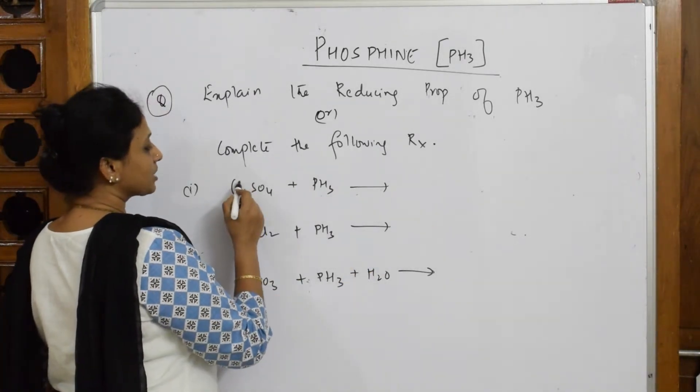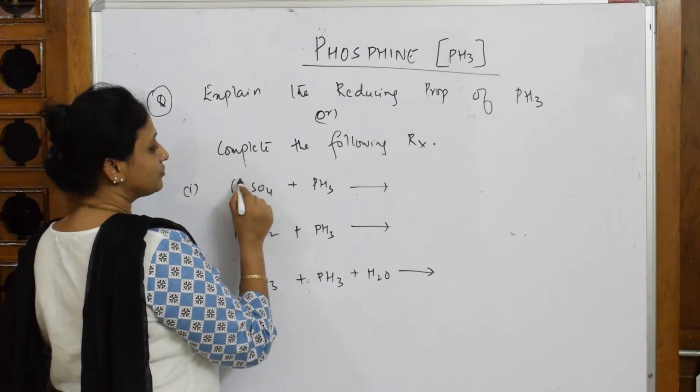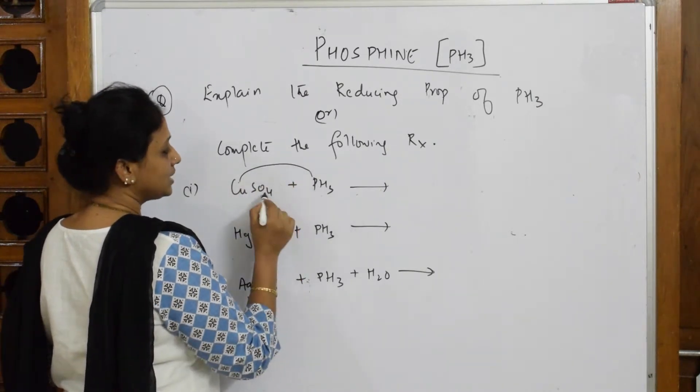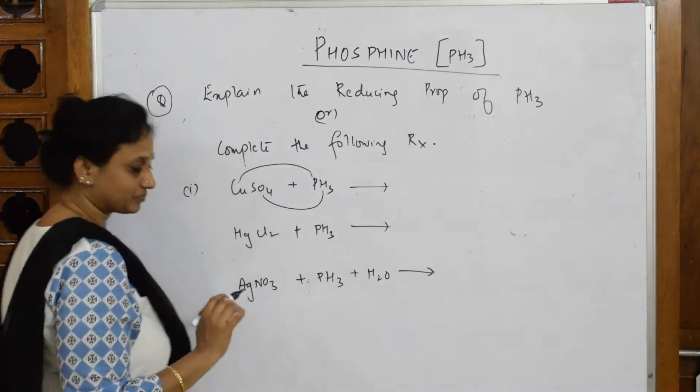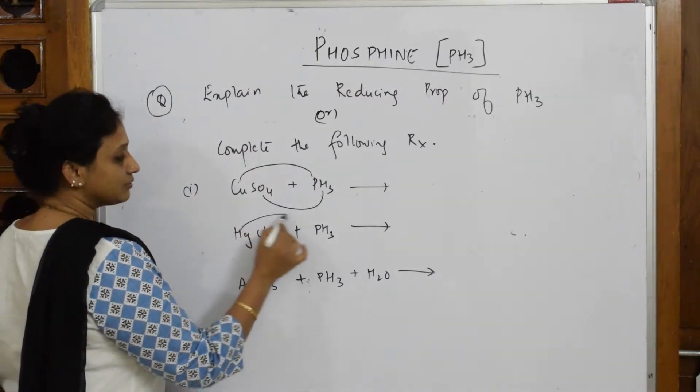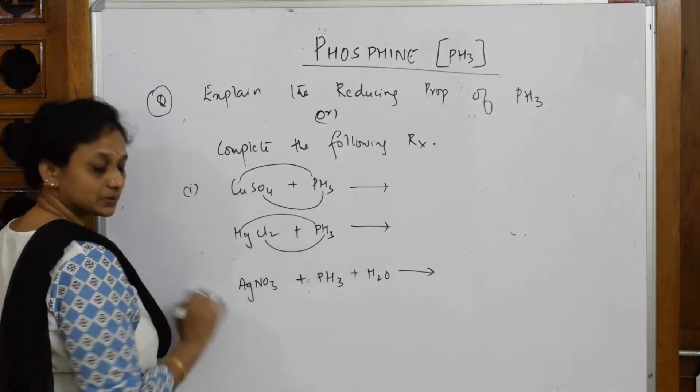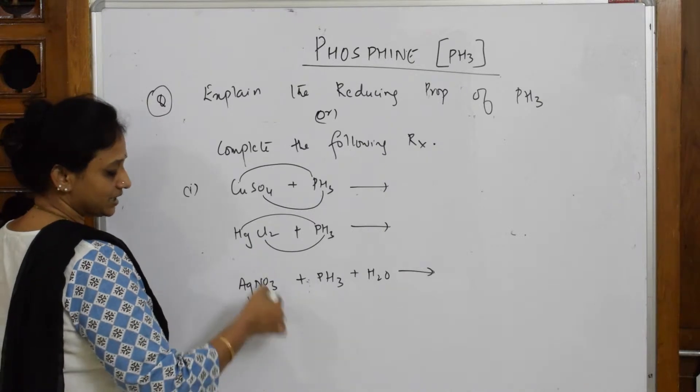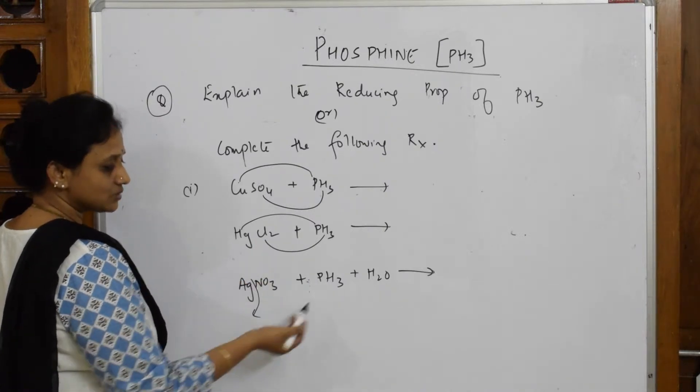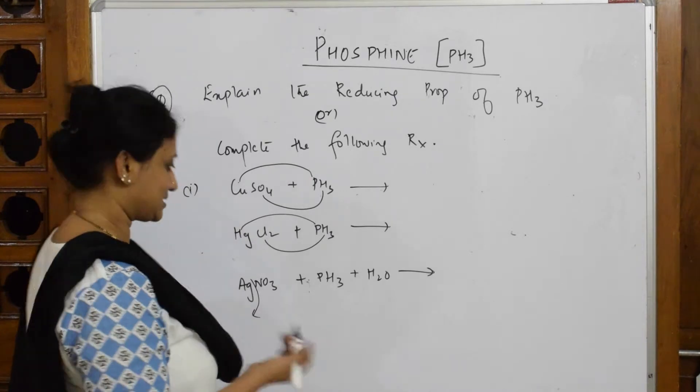Copper sulfate is going to form copper phosphide and sulfuric acid comes out. Here, mercuric phosphide and HCl comes out. Here, it is going to precipitate out silver. The silver precipitates out and the leftover comes out as nitric acid and phosphoric acid.